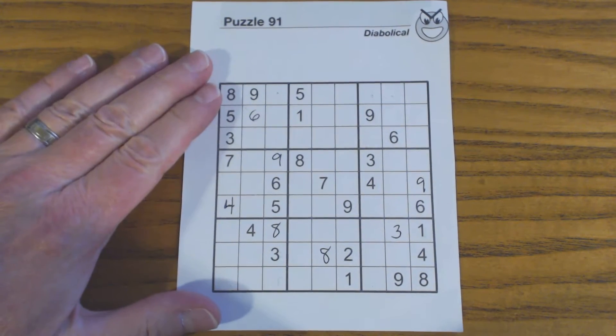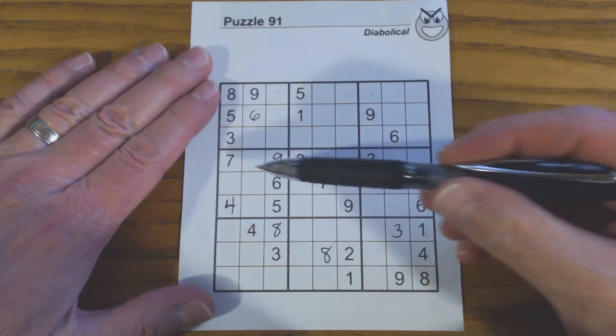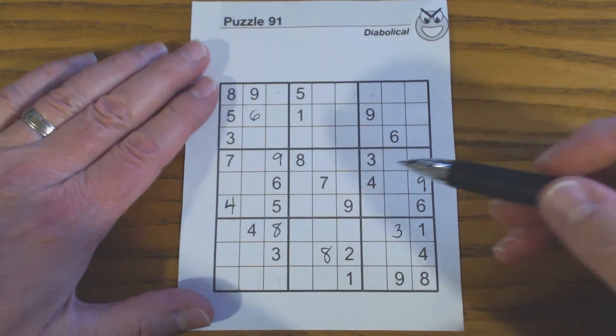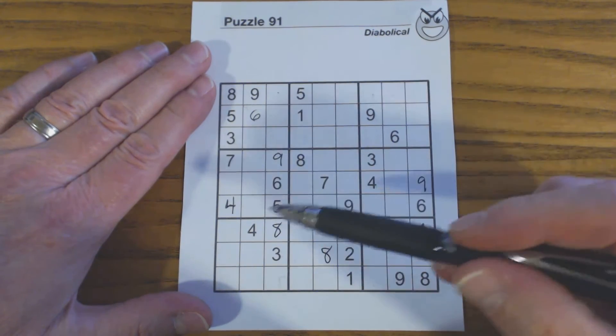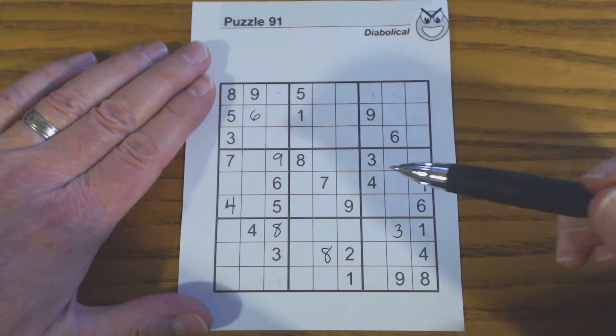We're going to look in this middle section here, these three rows, and we're going to do row completion on all three rows to see if we can find either individual numbers or twins.